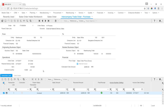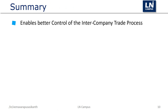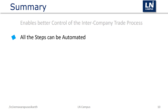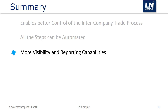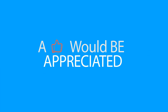To summarize: with the new intercompany trade solution, users can monitor and control the intercompany trade process effectively. The steps involved can be automated without additional load on users, and only in case of exceptions do users need to approve orders manually. ION Workflow can also be used for approvals. Better visibility on planned transactions, historic transactions, margin details, and reporting capabilities have been added through new dashboards and workbenches. Thanks for watching — if you have any questions, leave them in the comments section.